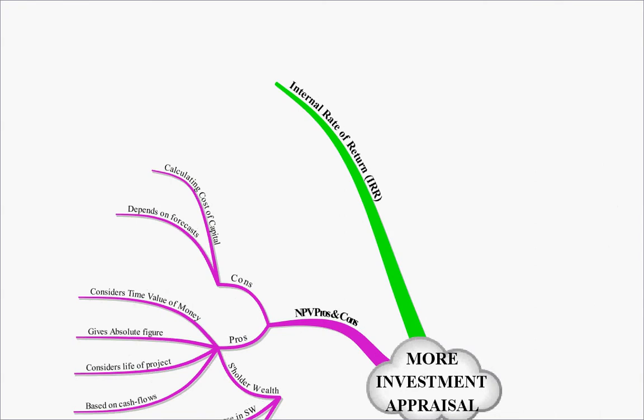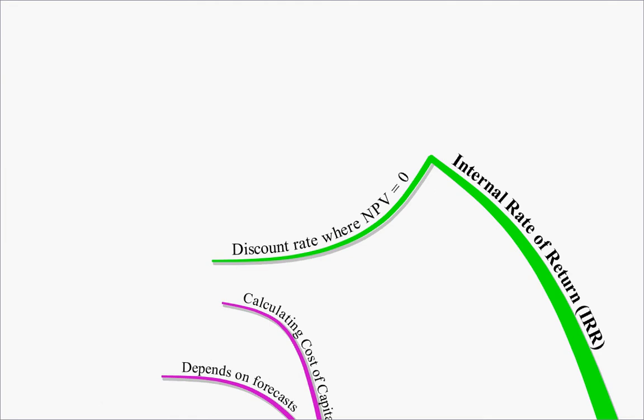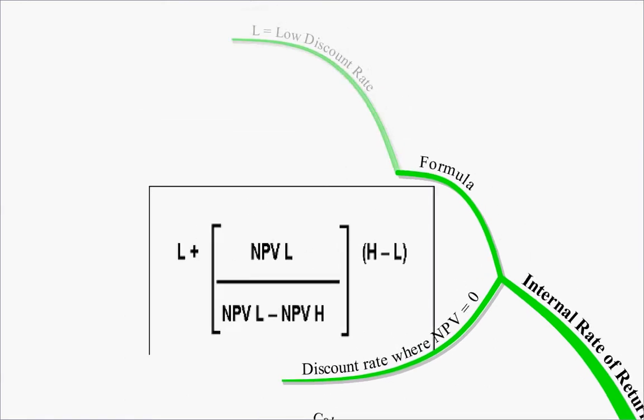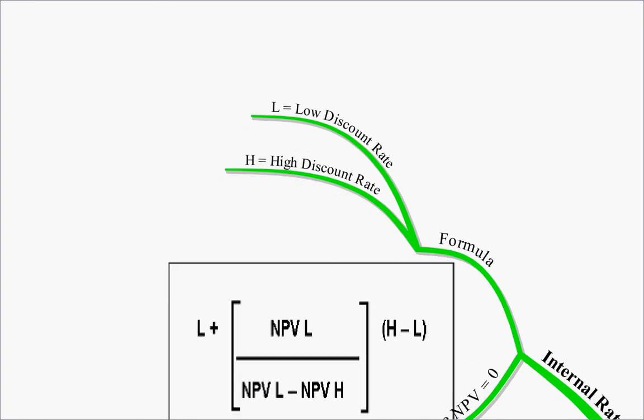So this brings us on to the internal rate of return. The internal rate of return is the discount rate, or the cost of capital, where the net present value calculation will equal zero. We calculate it using this formula. We discount at a low discount rate, for example 5%, and a high discount rate, for example 15%.